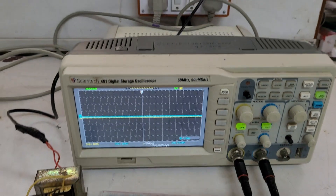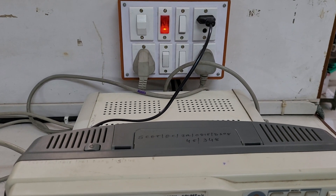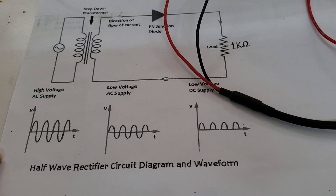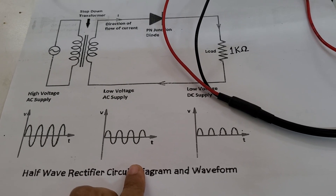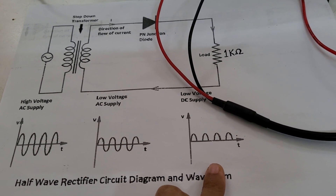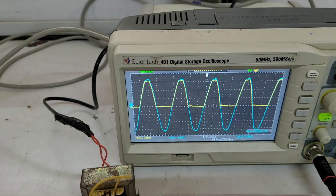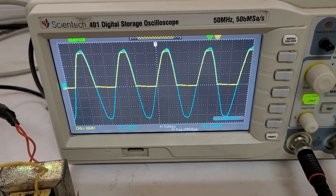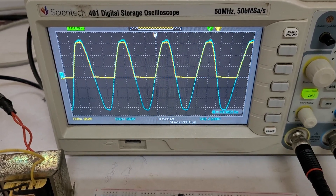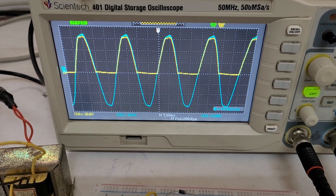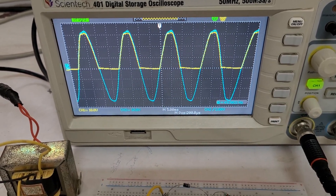I will switch on the transformer, which is going to use 220 volt AC. This is the circuit diagram we have already seen. The sinusoidal input signal, after passing through the diode, is going to be rectified — we are going to get the half wave. As you can see, the blue channel is the input sinusoidal signal and the yellow signal is the output. The yellow signal is the half wave rectified output, which is the expected output from this circuit.